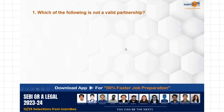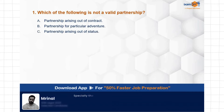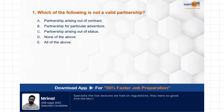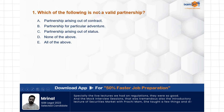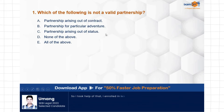Question: Which of the following is not a valid partnership? Options: partnership arising out of contract, partnership for a particular adventure, partnership arising out of status, none of the above, all of the above. Be careful — the word 'not' has been used here. They are asking which is not a valid partnership, so we have to be very careful with the wording, otherwise the answer completely changes.